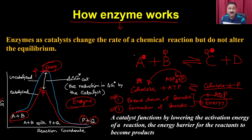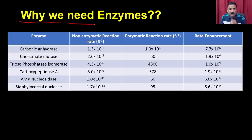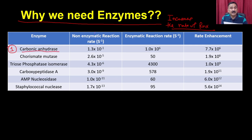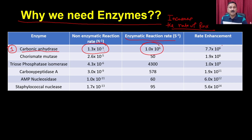But the question is why we need enzymes? Enzyme is required to increase the rate of reaction. That is the main purpose of the enzyme - because the enzyme does not participate in the reactions, they only increase the rate of reactions. For example, I have taken an example of carbonic anhydrase. If you have a non-enzymatic reaction rate, the reaction rate is very low - for example, 10 to the power of minus 1.